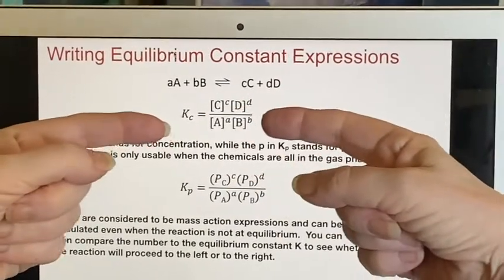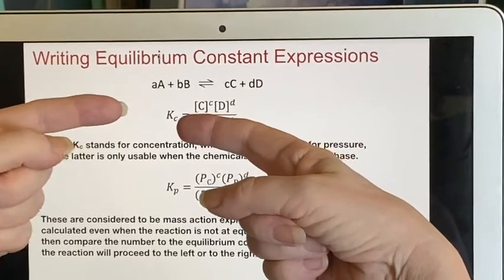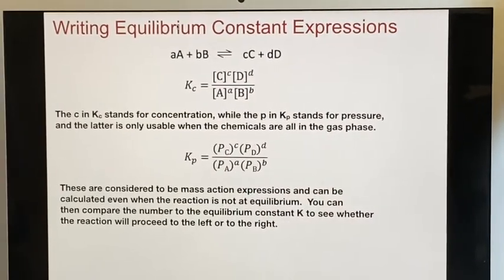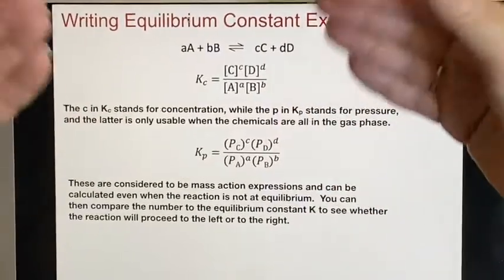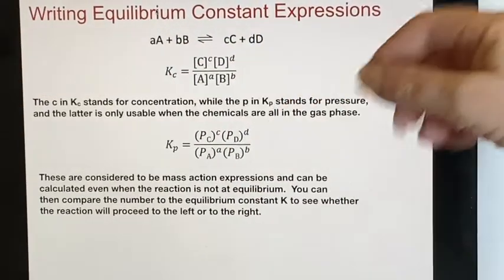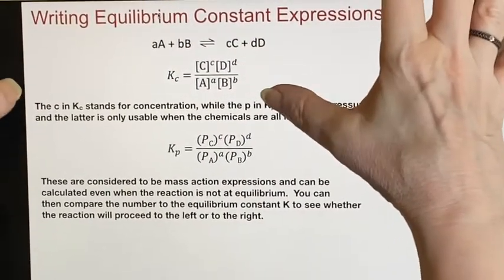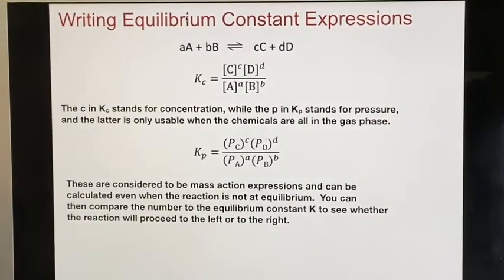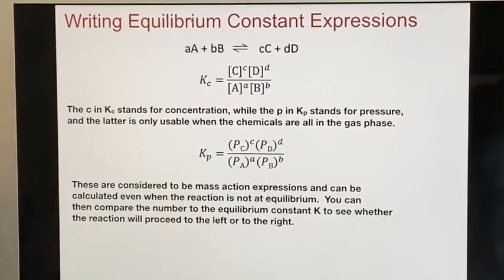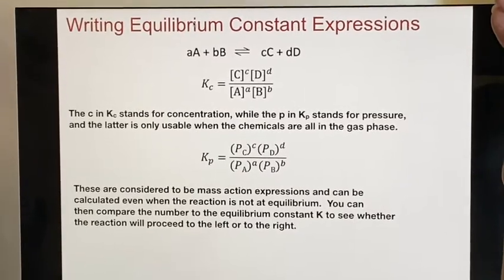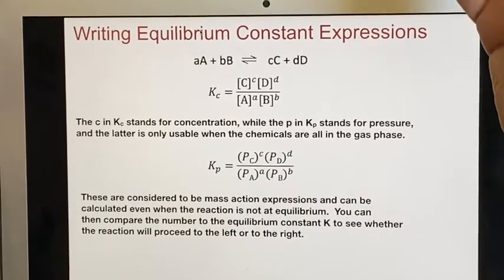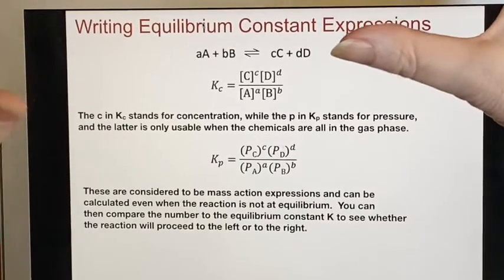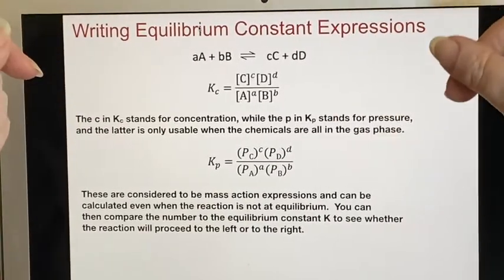Wait a minute, K sub C, where did this C come from? I just said capital K before. Well, it turns out there are two varieties. K sub C is when you're using concentrations for aqueous solutions. It can also be used for things that are in the gas phase because concentration really is moles per liter. So that could be expressed in terms of something that's a gas as well as something that's aqueous.